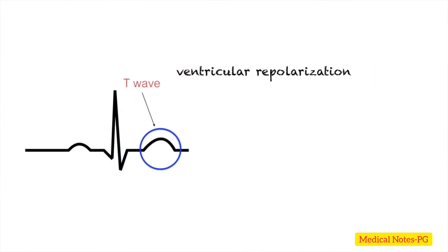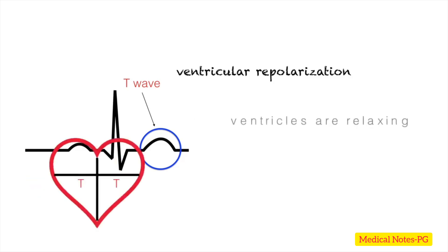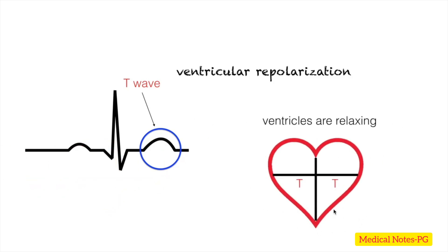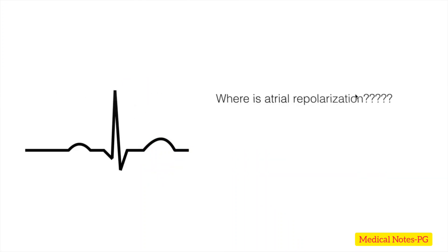The T wave represents ventricular repolarization — this is when the ventricles are relaxing. Keep in mind that every depolarization is always followed by repolarization, so every contraction is followed by relaxation. That raises the question: where is atrial repolarization? It can be found within the QRS complex.